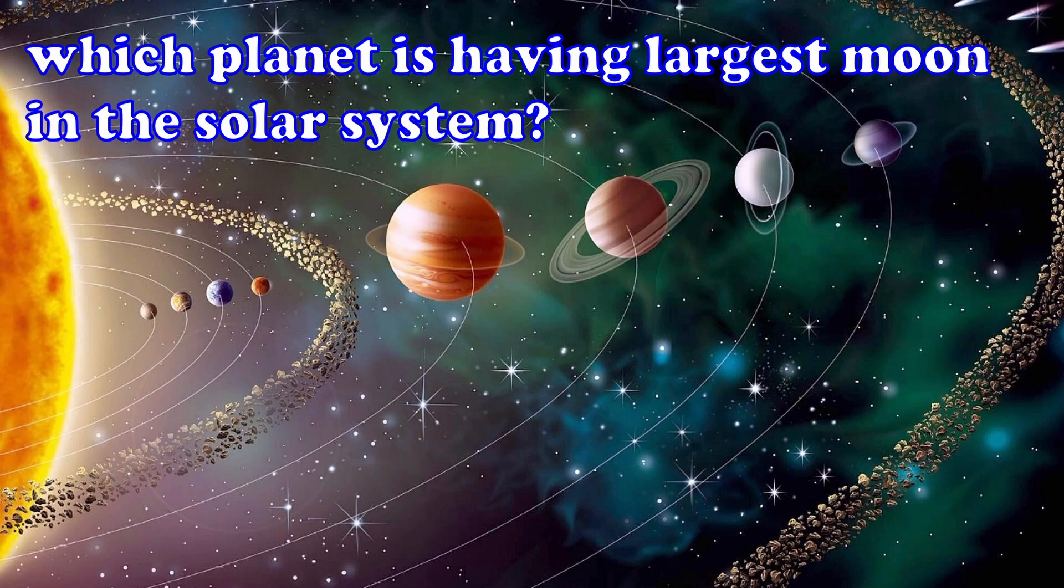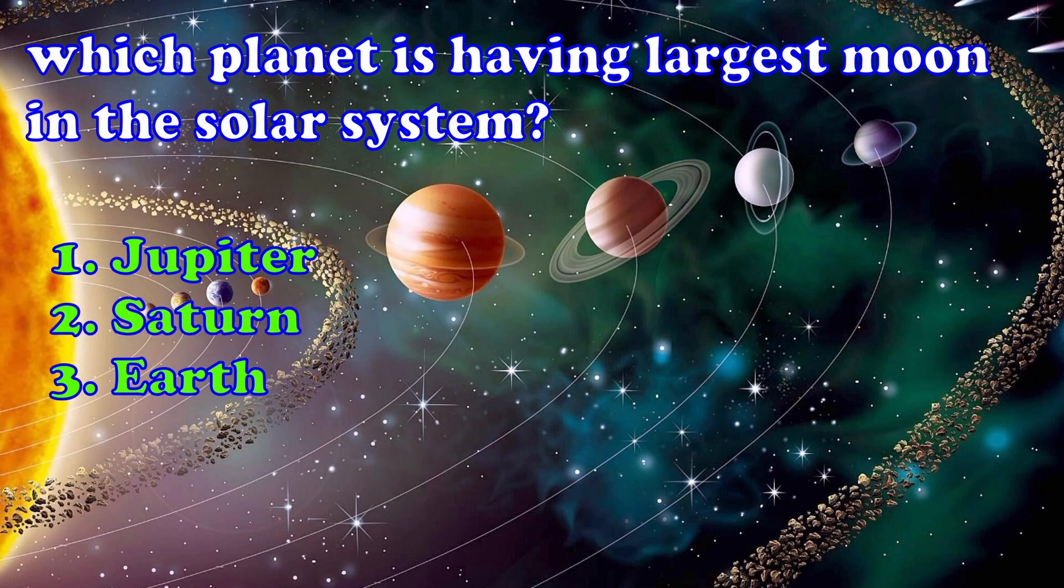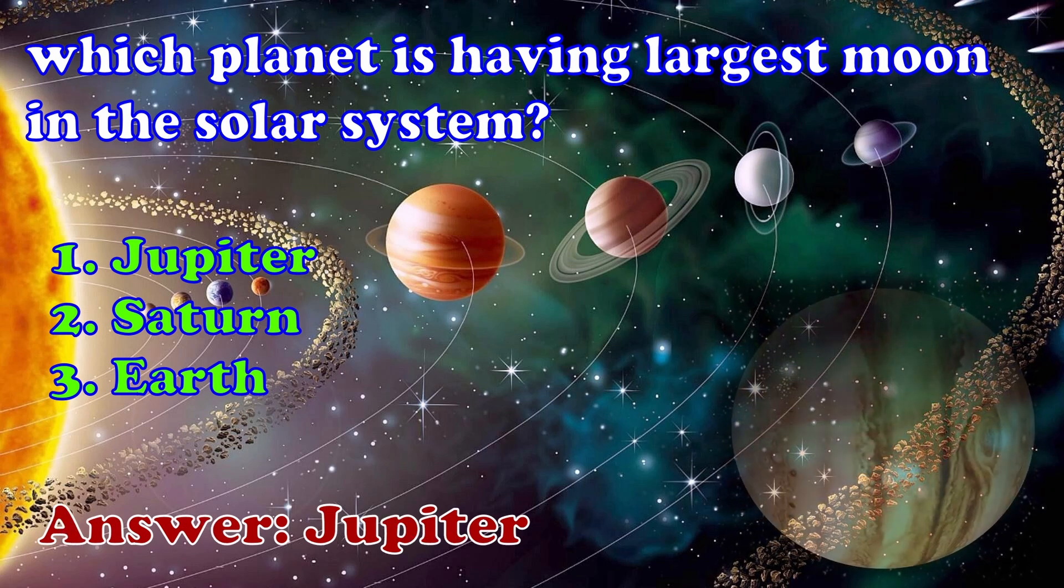Which planet is having largest moon in the solar system? 1. Jupiter, 2. Saturn, 3. Earth. The answer is Jupiter.